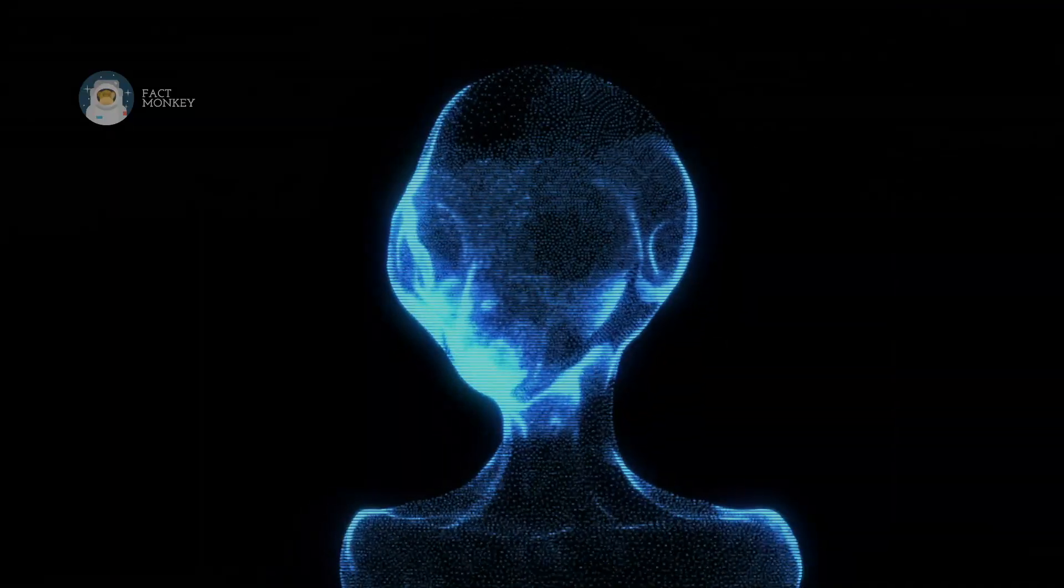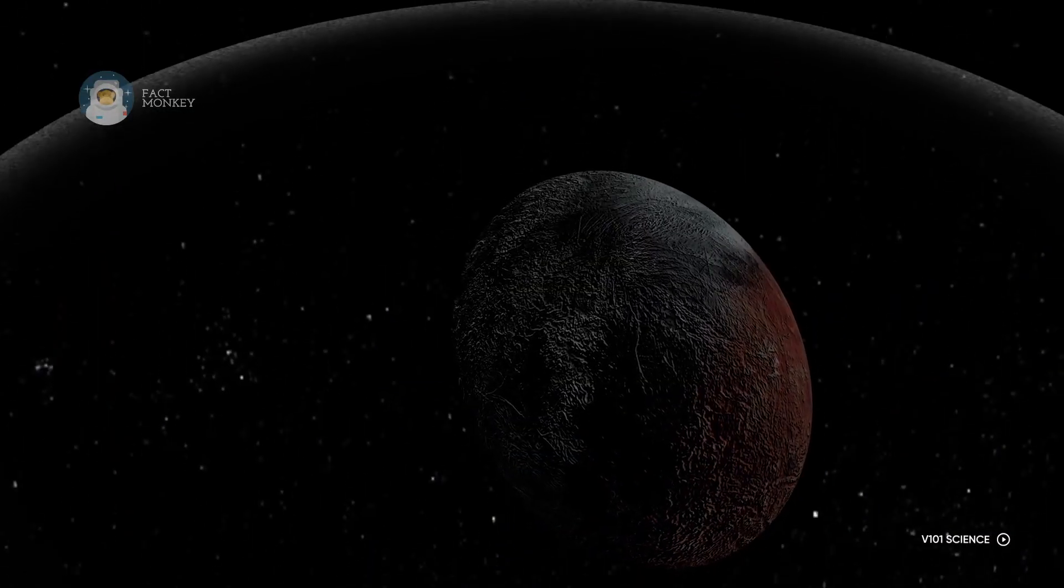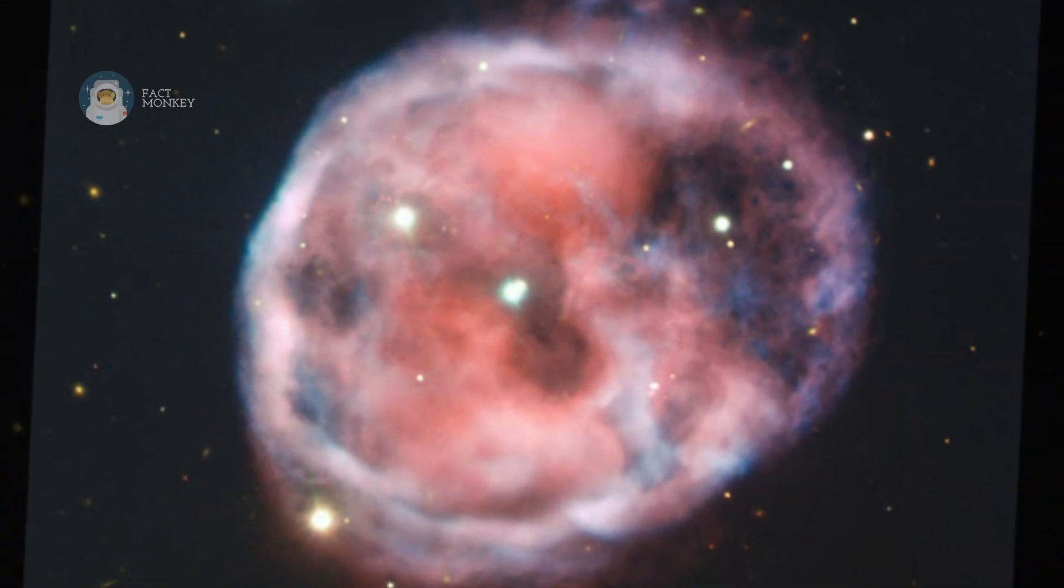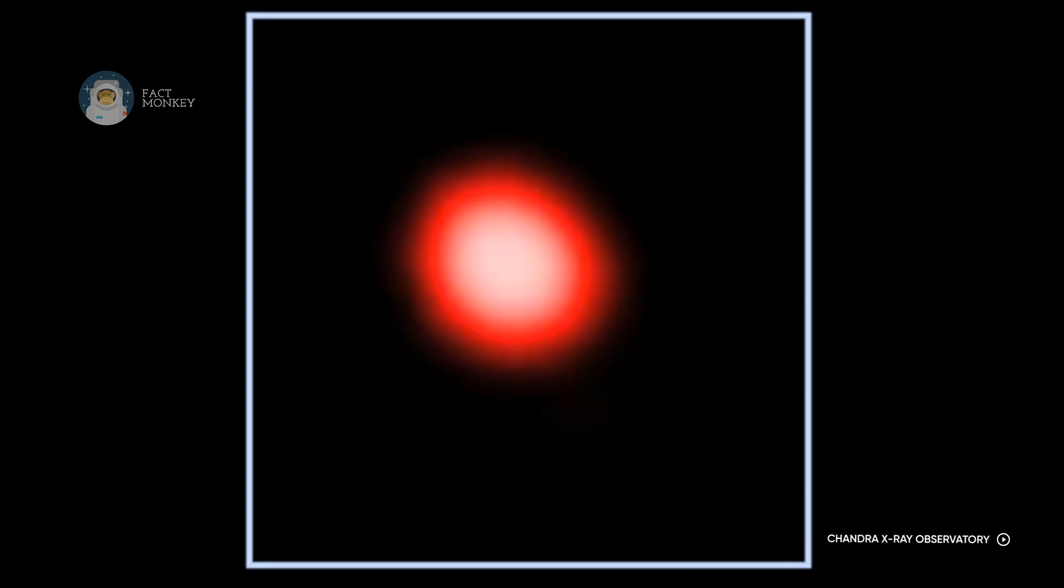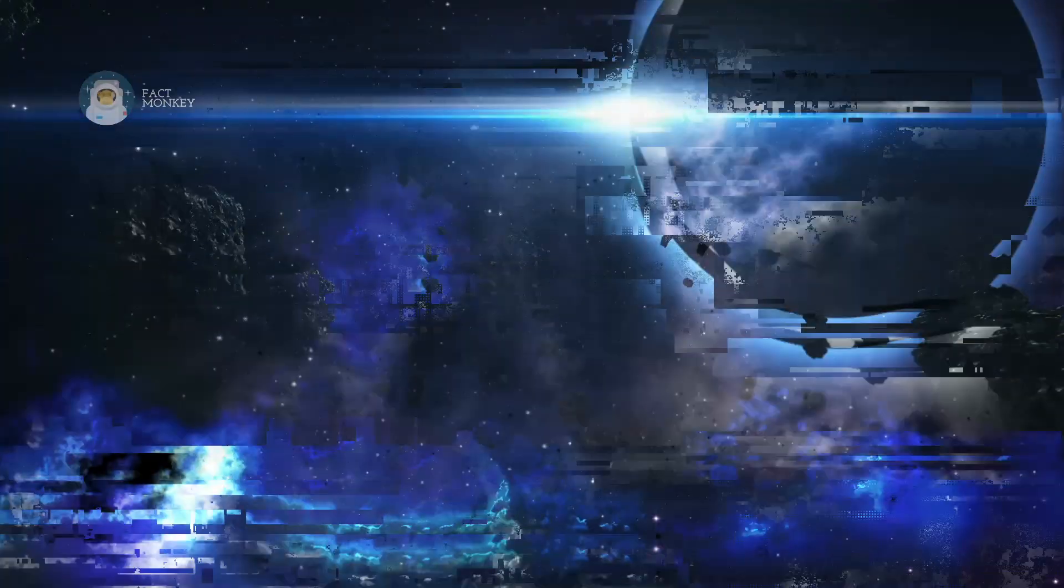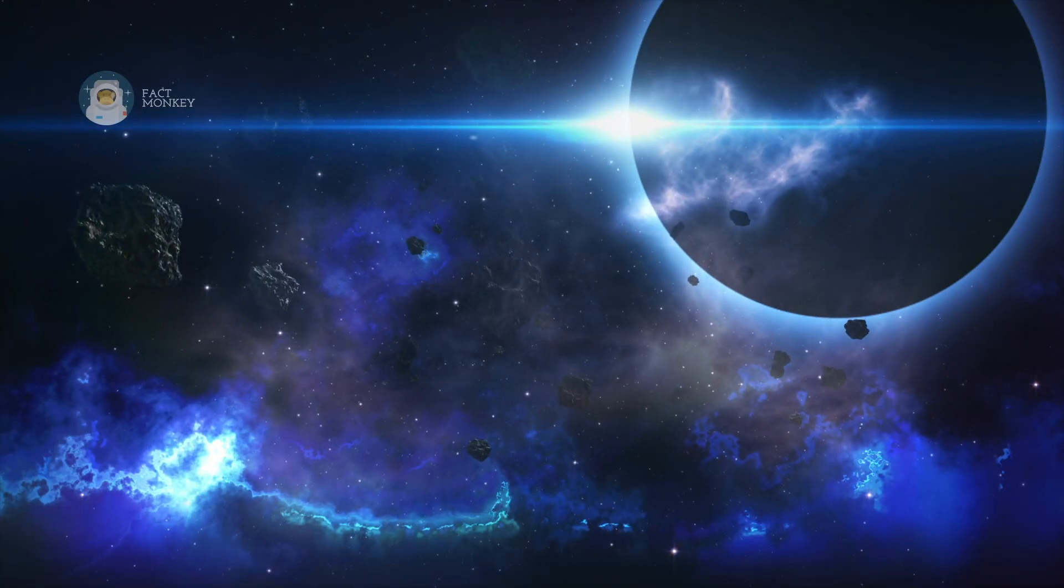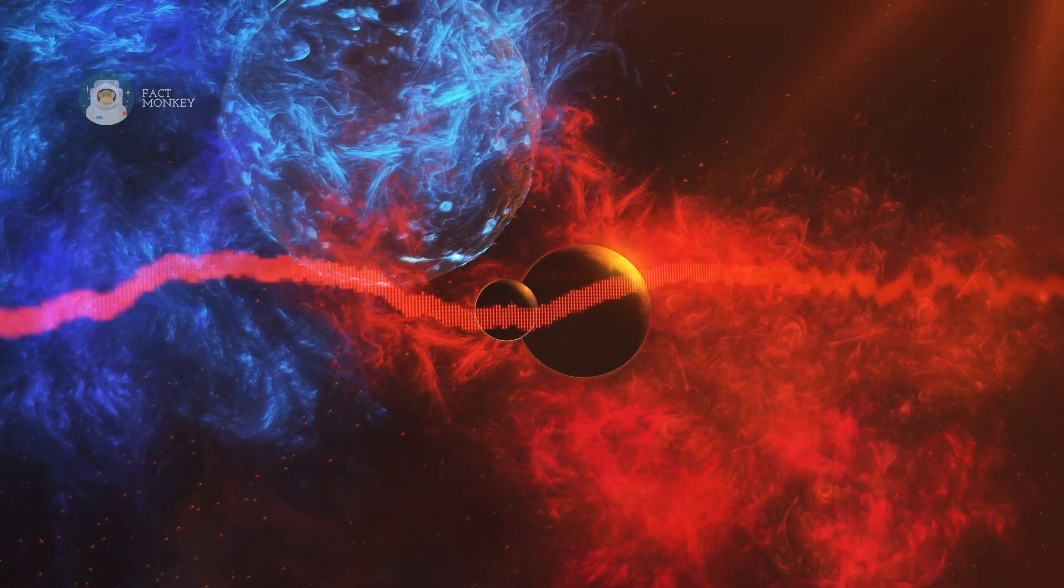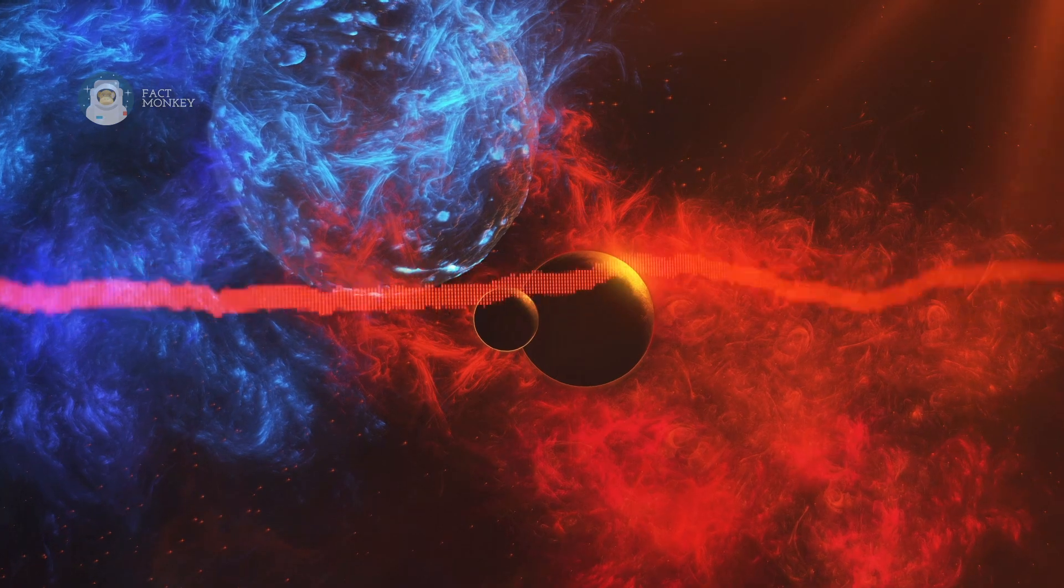Humans have inhabited the Earth for thousands of years, and yet there are still things that leave us completely baffled. So, can you imagine the number of mysterious things in space? A place where a select number of people have been. From a ninth planet lurking at the edge of our solar system to a signal that we receive from space, here are 10 Scary Space Facts.